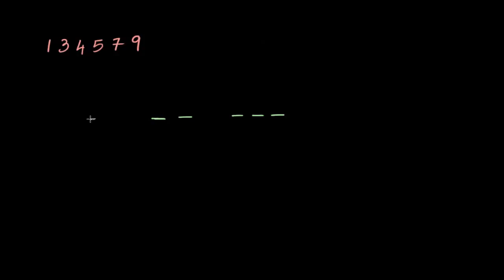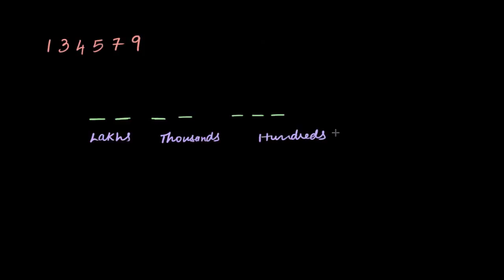So then I'll want to say: some lakhs, some thousands — for lakhs I'm putting only two blanks. So I'm going to write what I want to call them: some lakhs, some thousands, and some hundreds, tens, and ones. We read hundreds, tens, and ones together — we just say seven hundred and twenty-one, or in this case, five hundred and seventy-nine.